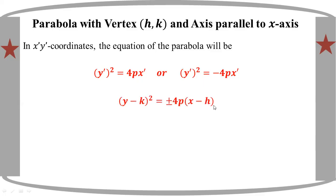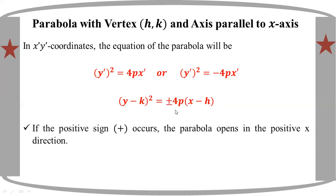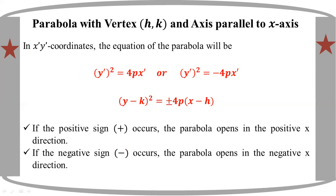This is the equation of the right. This is positive, so the parabola opens in the positive direction — to the right. This is open to the right. This is a negative sign, so the parabola opens in the negative H direction — open to the left.